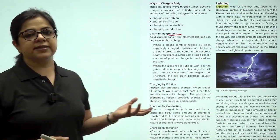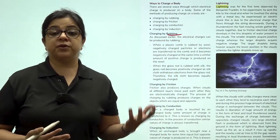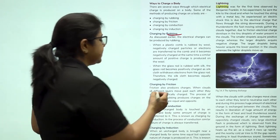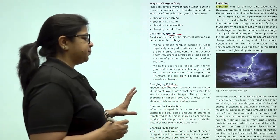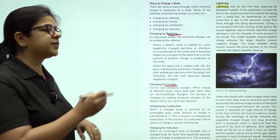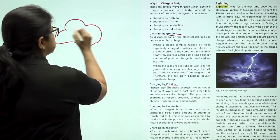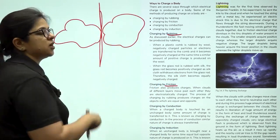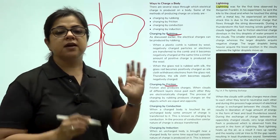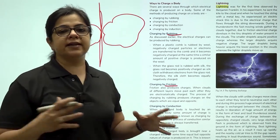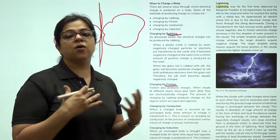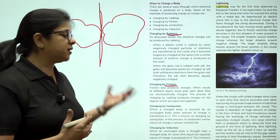So now we have understood how a body gains or loses charges. This is done by rubbing. We have taken the example of the comb and bits of paper. For example, when two clouds in the sky rub against each other, friction takes place.